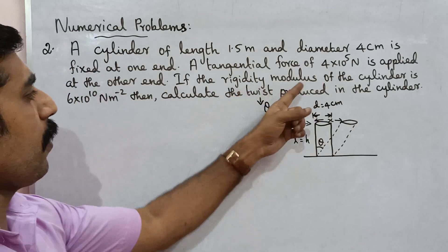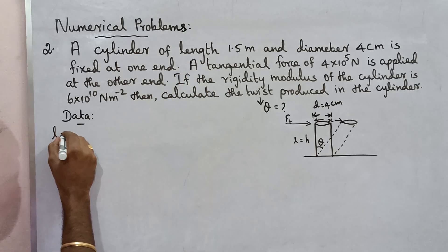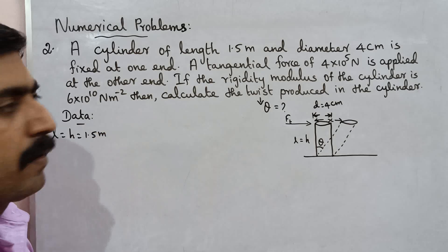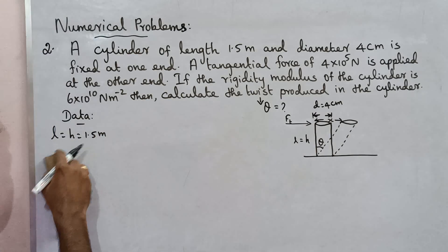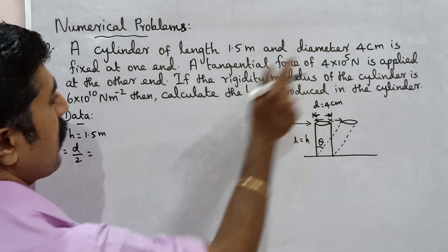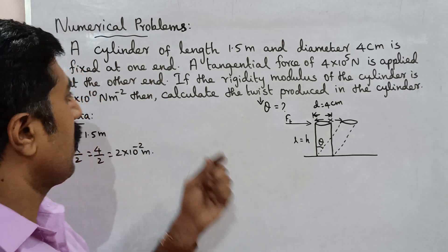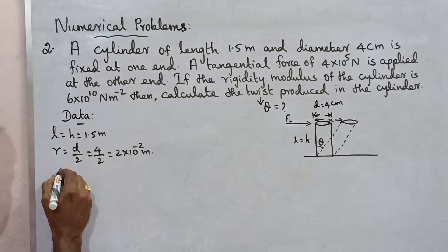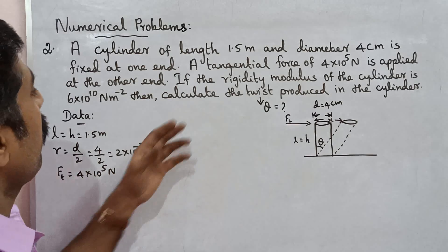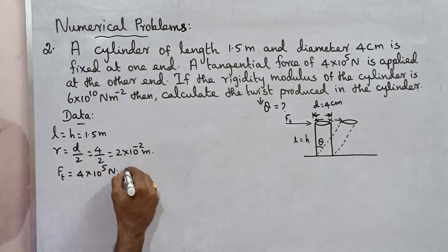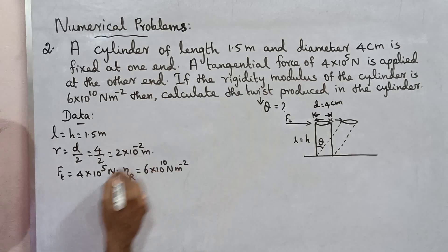This is rigidity modulus. So first, the data: length L is 1.5 meter, then diameter is given — diameter, so radius is diameter divided by 2 — that is 4 cm divided by 2 which is equal to 2 cm, that is 2 into 10 power minus 2 meter. Then tangential force F is 4 into 10 power 5 Newton. Rigidity modulus eta is 6 into 10 power 10 Newton meter power minus 2. Theta is equal to question mark.